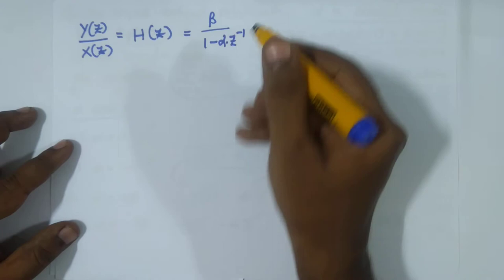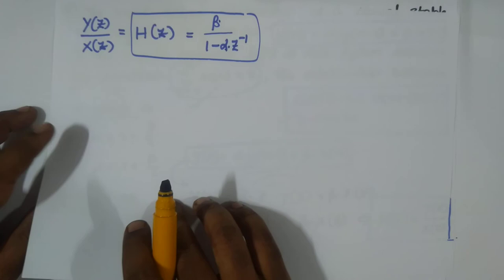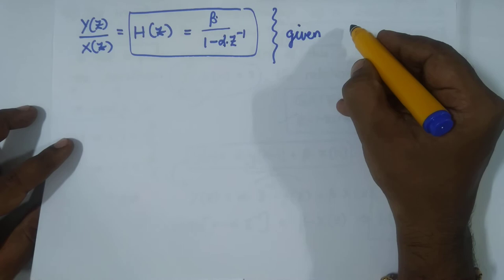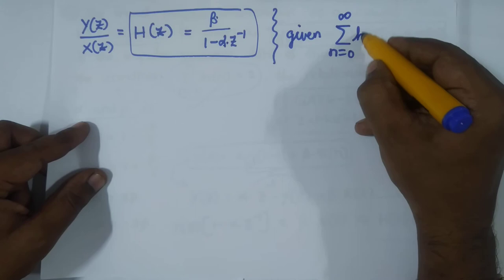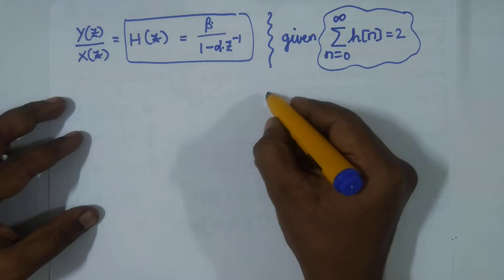In H(z) we have both β and α. Now, what is the given condition? The given condition is: the sum from n=0 to ∞ of h[n] equals 2. We need to figure out how to use this condition with our H(z).